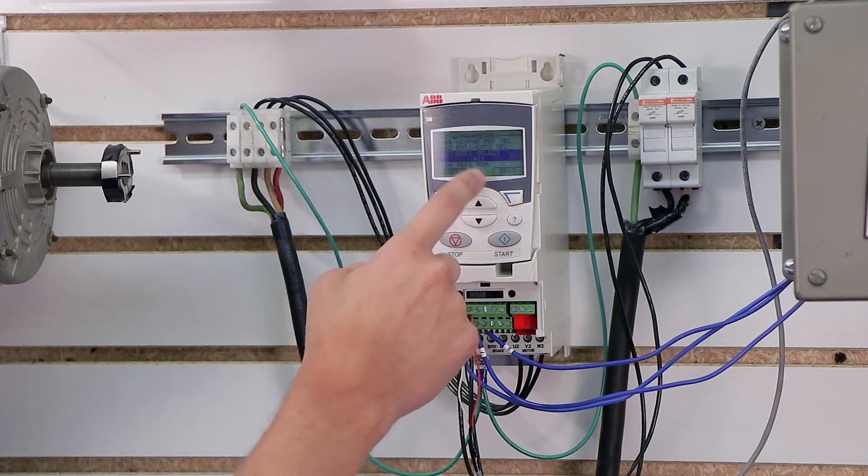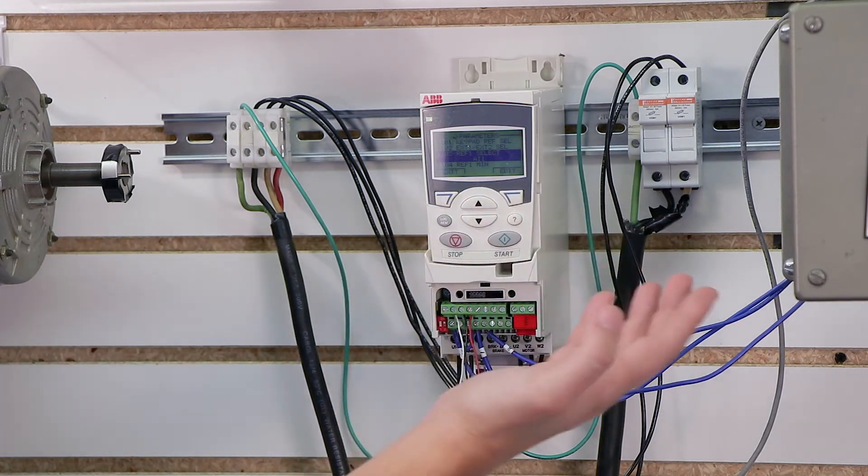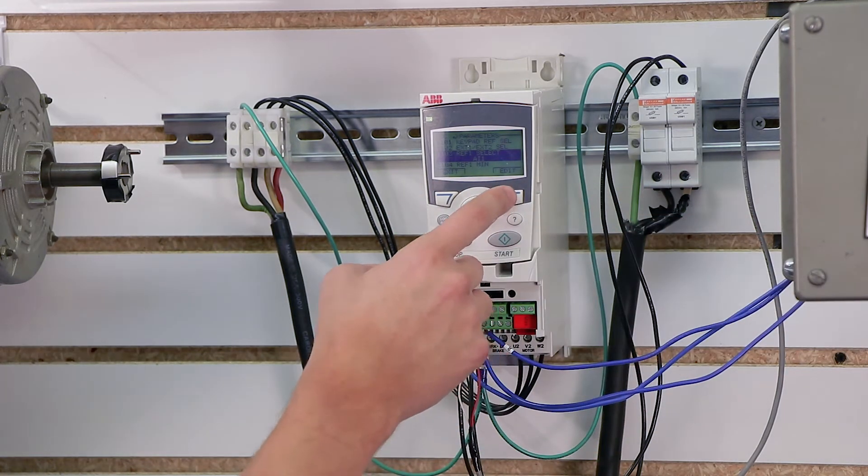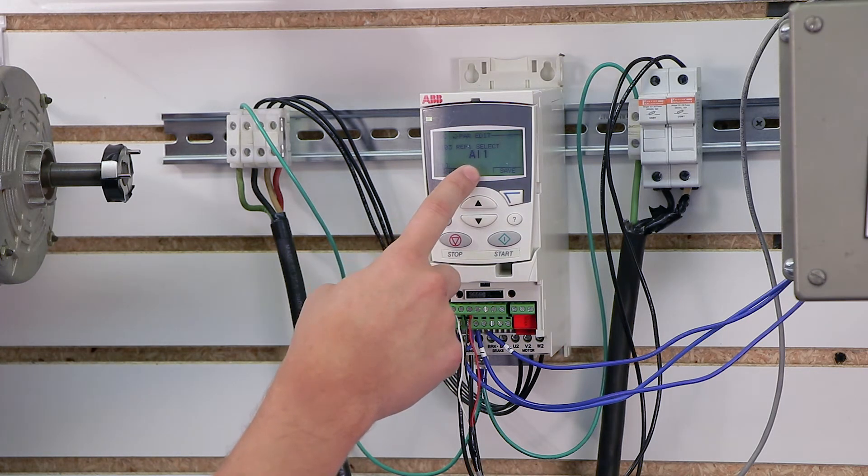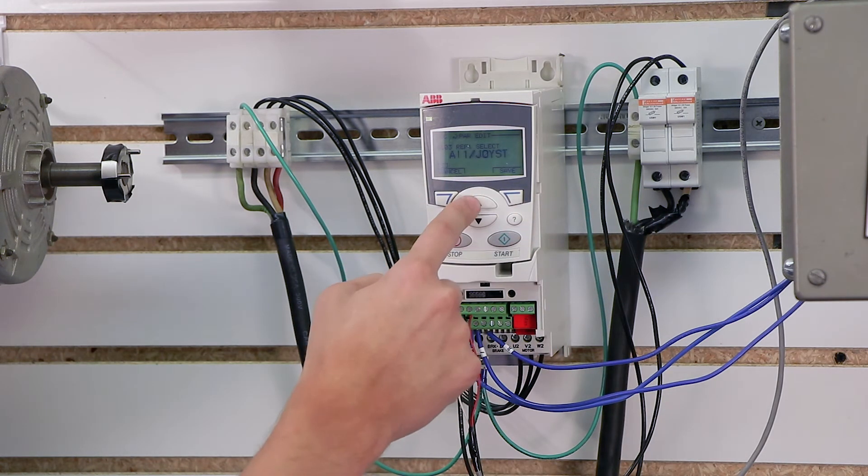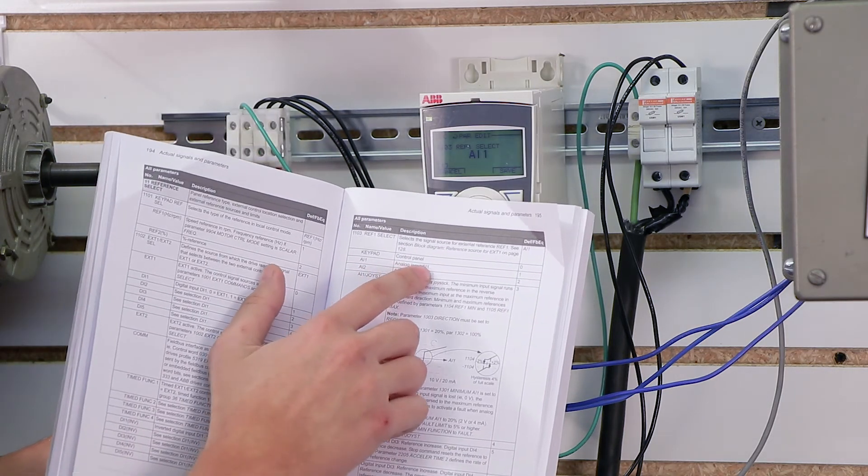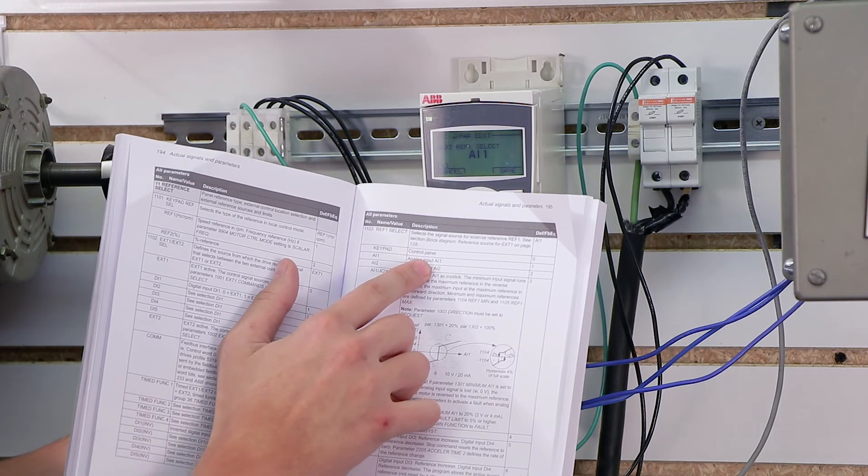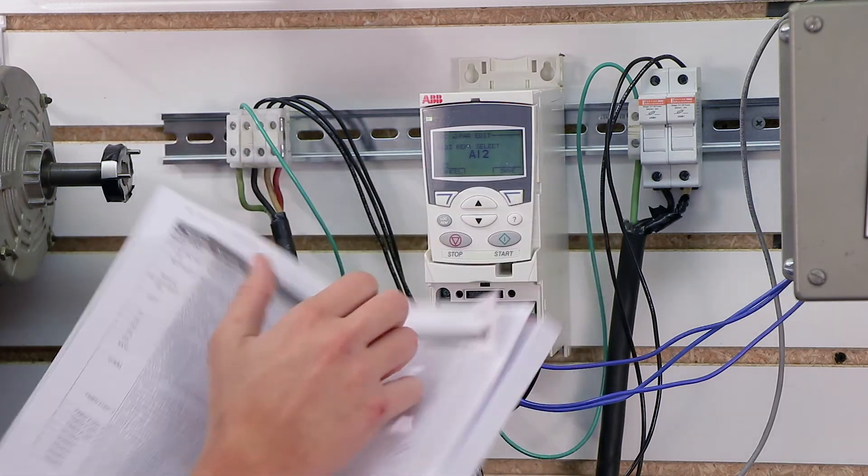If I press edit on 1103, then I can actually start scrolling through different options for my speed. So in this instance I might have it set up for analog input 1. But maybe I have my input wired to analog input 2. Each of these options corresponds to the manual. AI 1 just says analog input 1, that's what I'm going to look at for my speed. AI 2 says analog input 2. I'm going to look at analog input 2 for my speed.